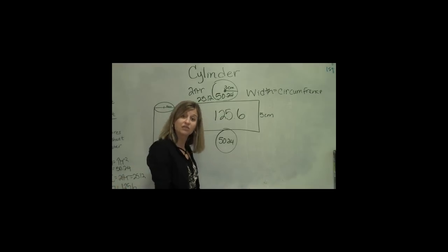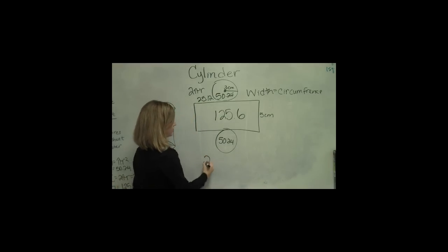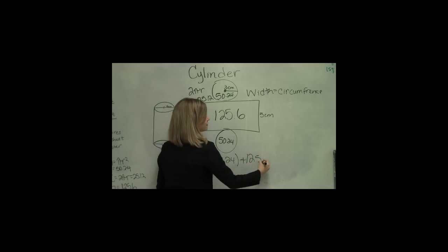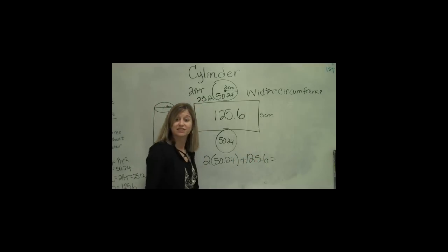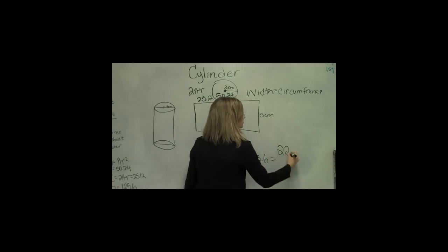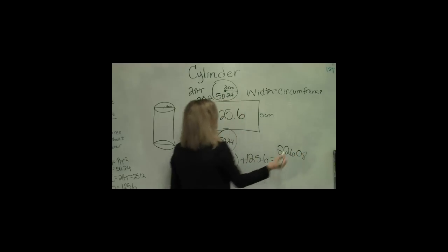Add up all the areas and you've got surface area. So I can say 2 times 50.24 plus 125.6. Together they equal 226.08. And don't forget centimeters squared.